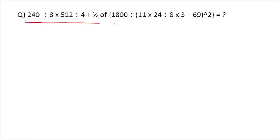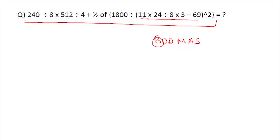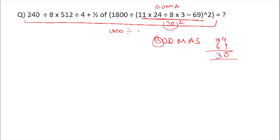This might seem very big, but if you apply BODMAS, you will get the solution in a very short time. According to BODMAS, solve the bracket first. Inside the bracket, there is also an equation — apply BODMAS again. There is no bracket and no 'of', but there is division, so do that first. 24 divided by 8 is 3; 11 × 3 = 33; 33 × 3 = 99; 99 minus 69 is 30. So this is 30 squared. Now we have 1800 divided by 900, which is 2.